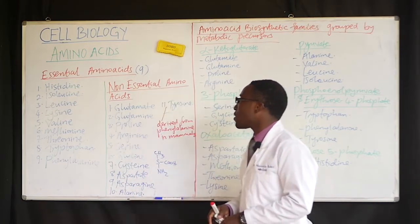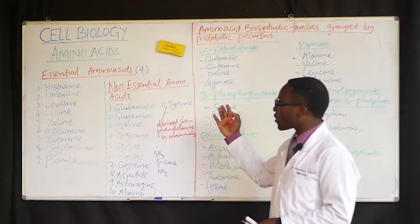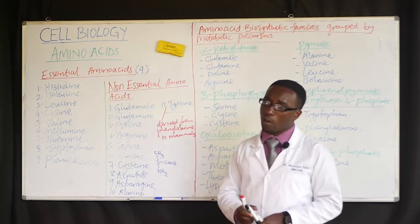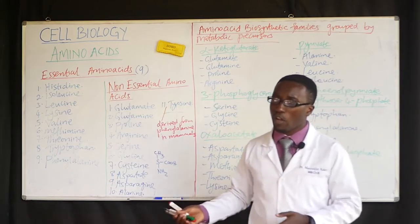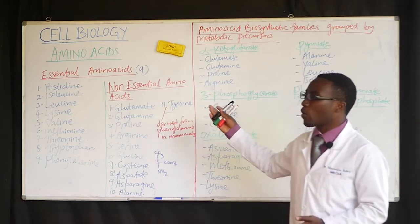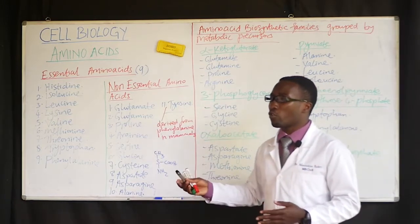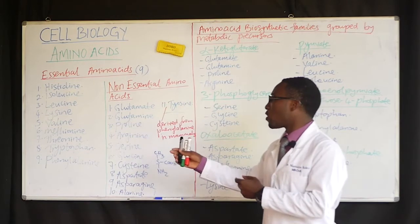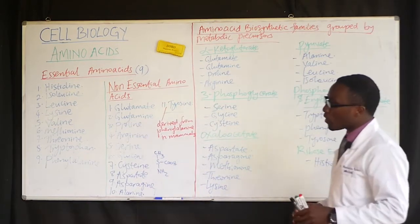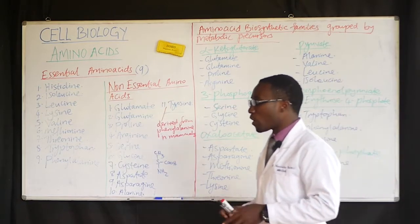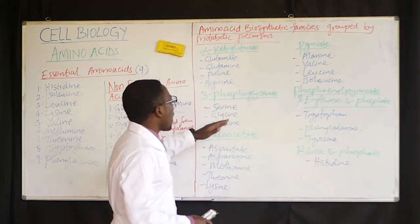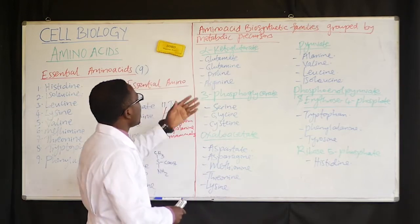In summary, the non-essential amino acids run from glutamate to tyrosine. These are the two categories of amino acids totaling 20 — nine essential and eleven non-essential. Most of them are derived from metabolic precursors.